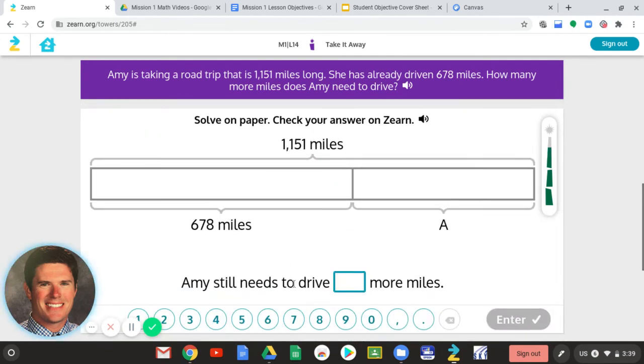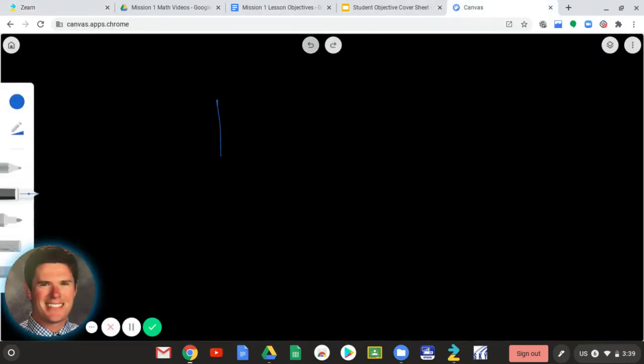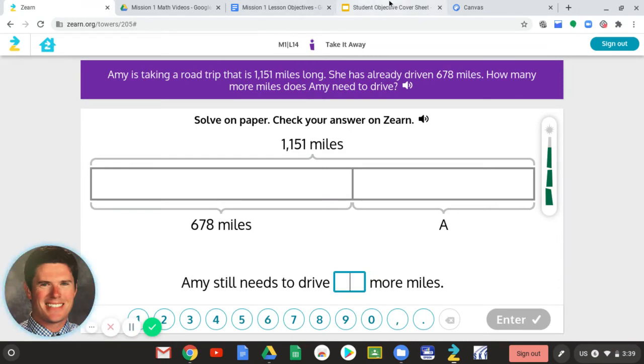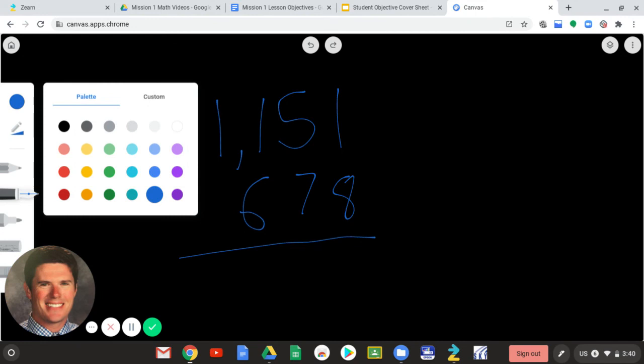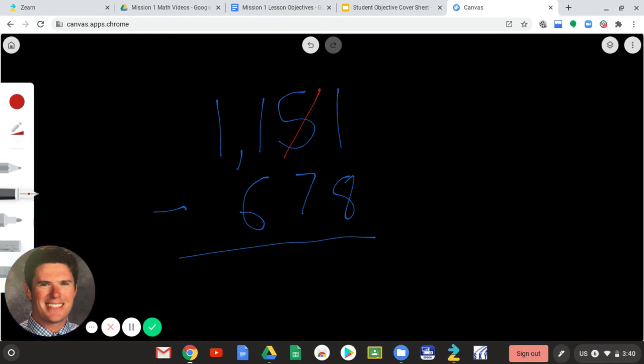And now what it wants me to do, it says Amy still needs to drive how many more miles? It just wants me to solve it now. So it wants me to write it down. I'm going to write my work out and I'm going to solve it. So if I need to borrow, can I do 1 minus 8? I cannot. So I'm going to borrow. I have to go to the tens place. Let's make it a different color. So now that I'm borrowing from this 5, it becomes a 4 because I have to take away from it. And that 1, I have to add 10 to it. 10 plus 1 is 11.